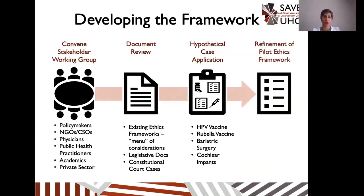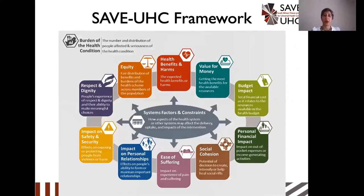To do so, we undertook a proof-of-concept study to do two things: first, to understand an approach to developing a framework by developing said framework; and second, to understand how an ethical analysis using a framework would influence HTA recommendations by undertaking real-time HTA cases. In order to develop the framework, we convened a multi-stakeholder working group, which went through a series of meetings to review current literature on existing ethical frameworks, legislative documents including the NHI policy, and constitutional court cases where the right to health has been legally tested. They then went through an iterative and deliberative process of voting, deliberation, and testing the framework against hypothetical cases. This resulted in the Save UHC framework, consisting of 12 domains with related considerations — including burden of health condition, health benefits and harms, value for money, budget impact, and system factors.